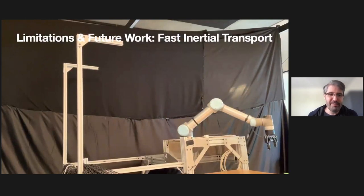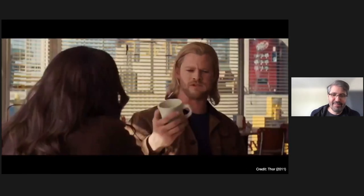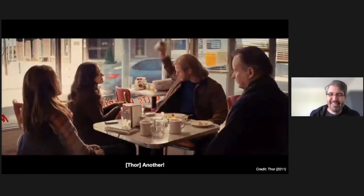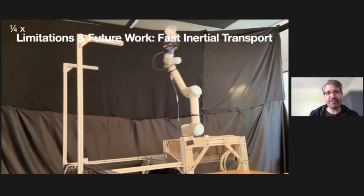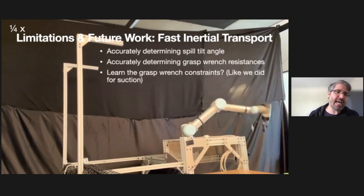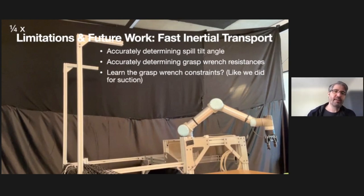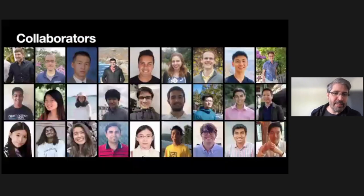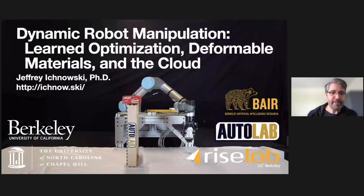This is probably my favorite blooper reel — it reminds me of Thor. There are limitations in that many parameters are not accounted for in these fast transports. Could we actively and accurately determine the spill tilt angle and the grasp rent resistance? Could we learn the grasp rent resistance like we did for suction? I'll end by thanking all my collaborators who made this research really fun and exciting to do. Thank you, and I'll open up to any questions.